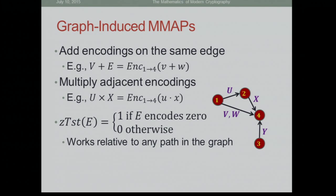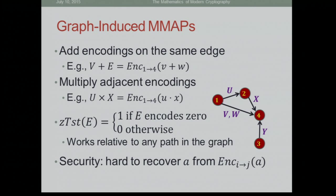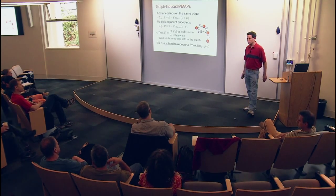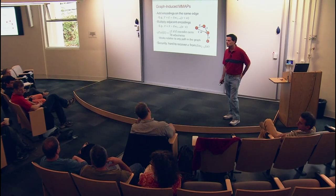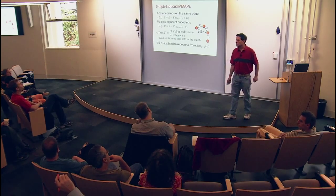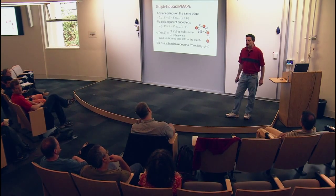Zero testing: for now, you can zero test any encoding anywhere in the graph, but you can have variants where only source-to-sink encodings can be zero tested. You need security — the very basic property is that you cannot recover the plaintext values from the encodings. If you have two encodings and two paths that are consecutive on the graph, you can multiply them and get an encoding relative to the concatenated path.